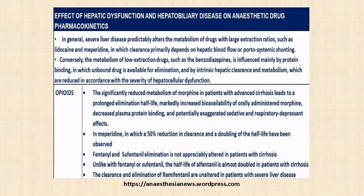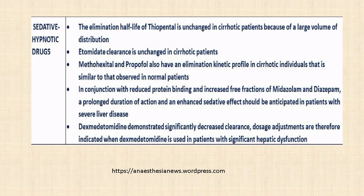The reduced metabolism of morphine in patients with advanced cirrhosis leads to prolonged elimination half-life. In meperidine, a 50% reduction in clearance and a doubling of the half-life have been observed. Fentanyl and sufentanil elimination is not appreciably altered in patients with cirrhosis. The half-life of alfentanil is only doubled in patients with cirrhosis because of a large volume of distribution.